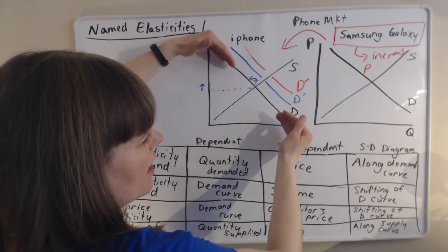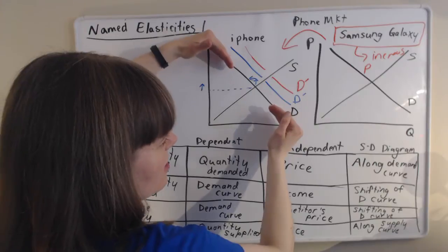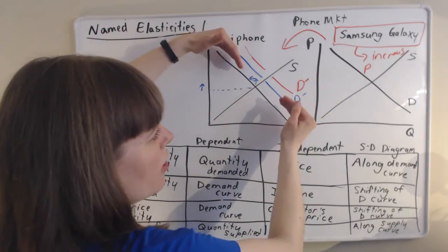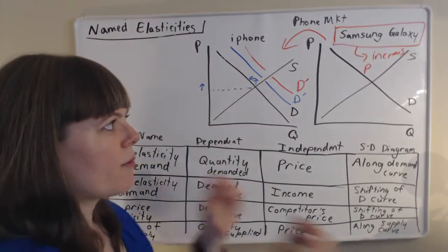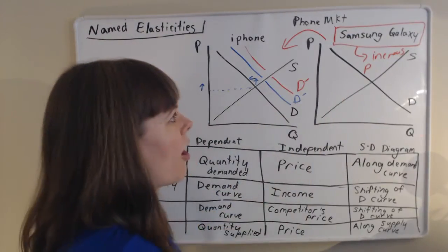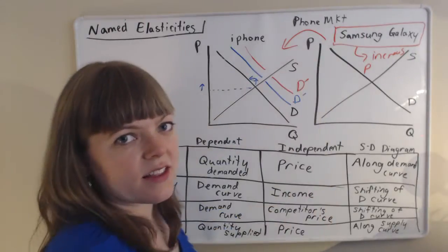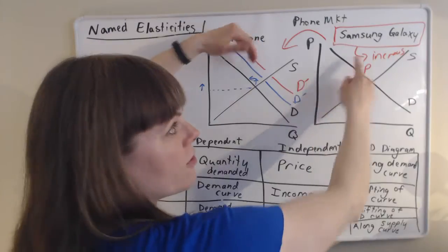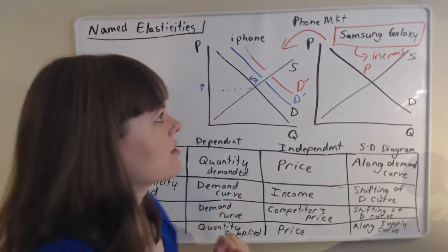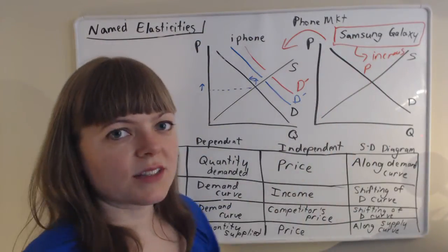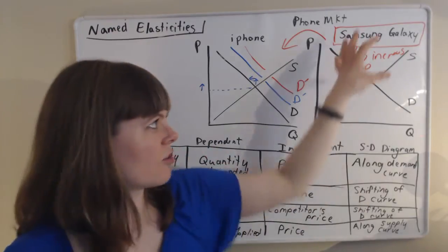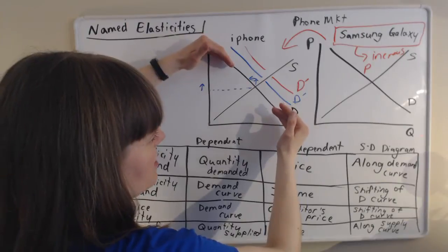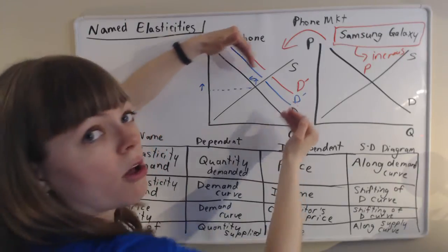So it's saying when Samsung increases their prices, do we have a really big increase in iPhones or a really small increase in iPhones? And that probably depends on how close these substitutes are. If these two are almost exactly the same in everybody's eyes, then there's going to be a really big increase in demand for iPhones when Samsung increases their prices. But if people view Samsung as unique, they have features that iPhone doesn't have, this is sort of a completely separate thing, then when Samsung increases their prices, iPhone will only experience a small increase in demand.